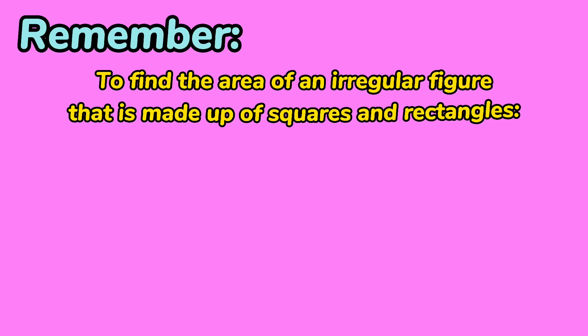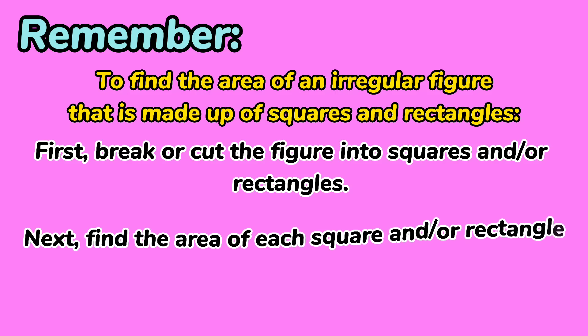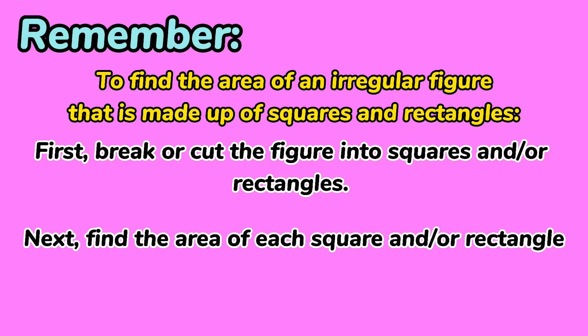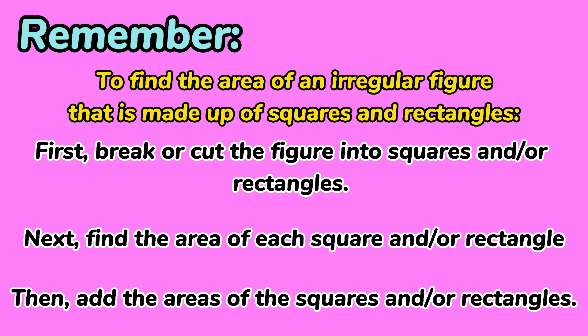Remember, to find the area of an irregular figure that is made up of squares and rectangles: First, break or cut the figure into squares and or rectangles. Next, find the area of each square and or rectangle. Then, add the areas of the squares and or rectangles.